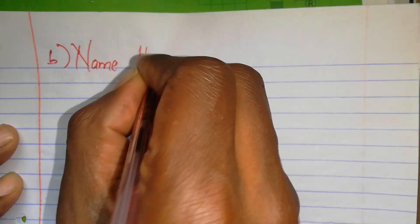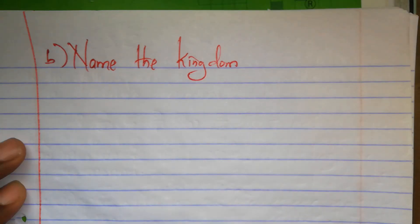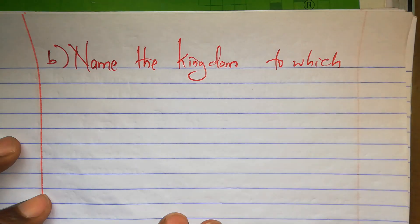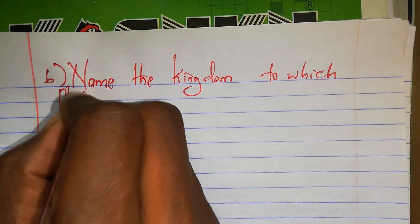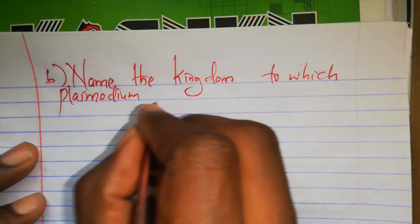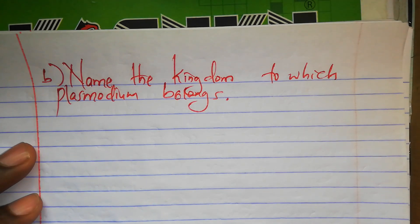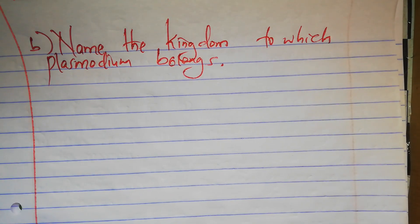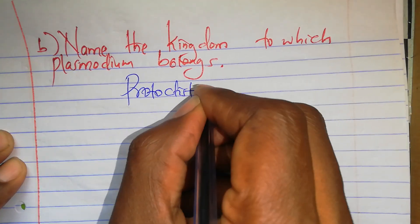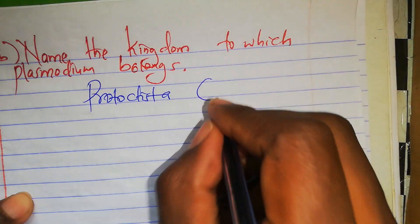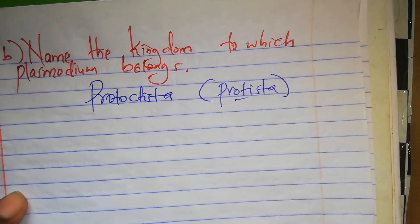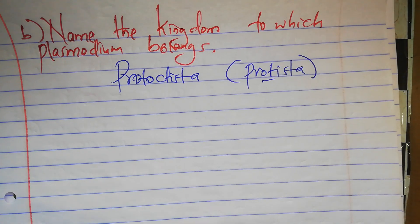2B: name the kingdom to which Plasmodium belongs. Remember we have a video we did on the kingdoms — all five of them. Plasmodium is a protozoan and it belongs to the kingdom Protoctista. Most marking schemes also allow writing it as Protista. This is kingdom number two when arranged from smallest to largest — after kingdom Monera, then Protoctista, then Fungi, then Plantae, and finally Animalia.